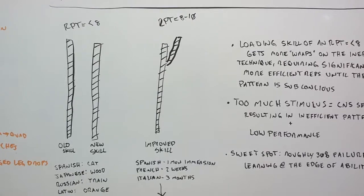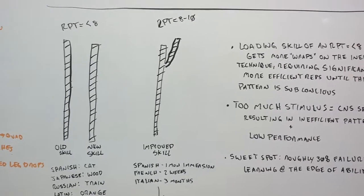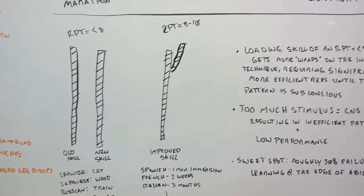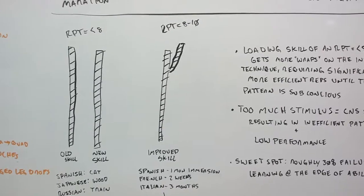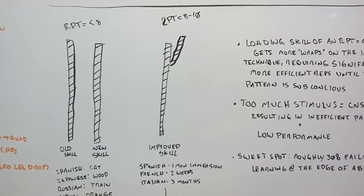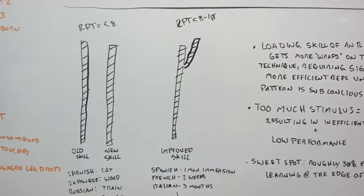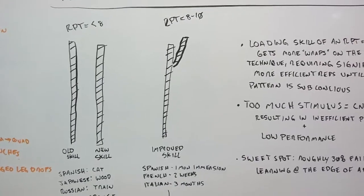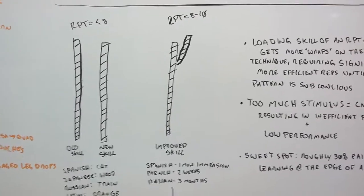RPT, you see that up there, that's called rate of perceived technique. Rate of perceived technique should always be an eight, nine, or ten out of ten. Ten being the best technique you can perform at that point in time. Anything below that is going to be an inefficient skill and we're going to get into that.